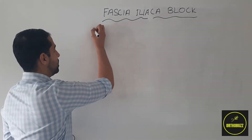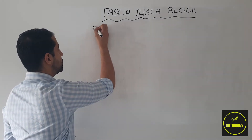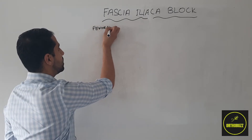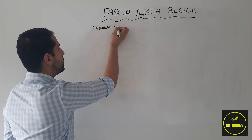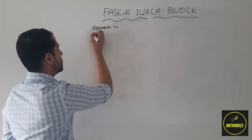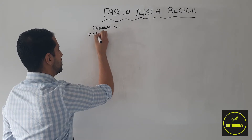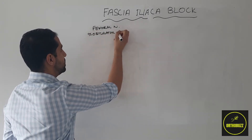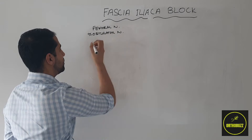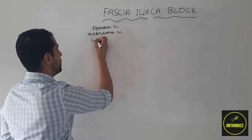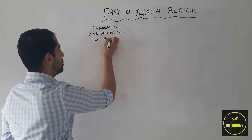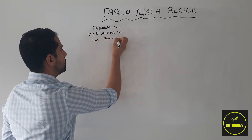The fascia iliaca block targets two or three main nerves. These are the femoral nerve, the obturator nerve — although this is variable — and the lateral femoral cutaneous nerve.